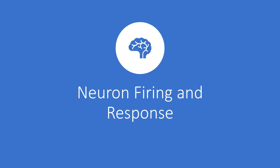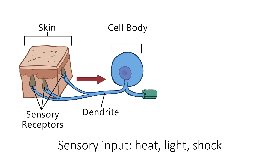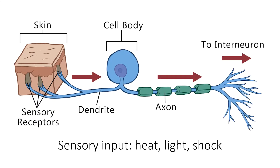Let's take a look at how we sense and respond to stimuli. Stimulus is simply a word for sensory input, and this can include things like light, touch, heat, etc. For example, let's say someone hits their knee. Sensory receptors pick up the signal and transfer it along the dendrite and axon to the subsequent neuron.